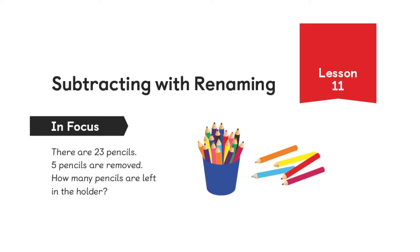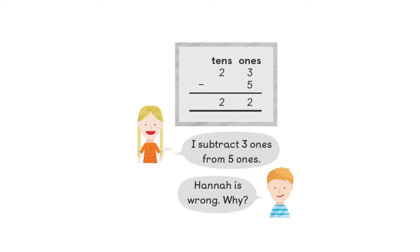There are 23 pencils, 5 pencils are removed — how many pencils are left in the holder? Of course the students do 23 minus 5. And the girl Hannah said, 'I subtract 3 ones from 5 ones.' That's incorrect — that's a misconception.